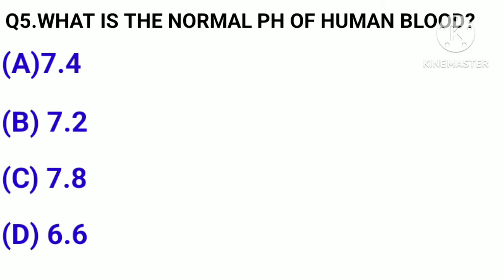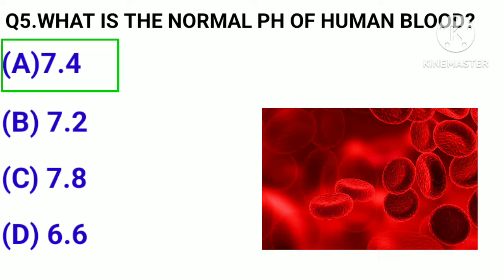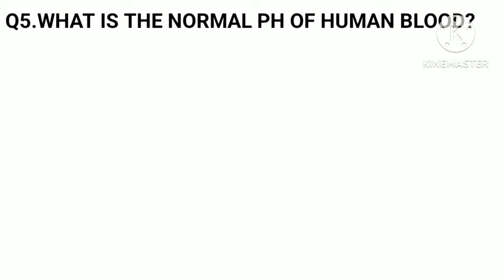Question number 5. What is the normal pH of human blood? Option A, 7.4. B, 7.2. C, 7.8. D, 7.6. Correct answer: Option A, 7.4.